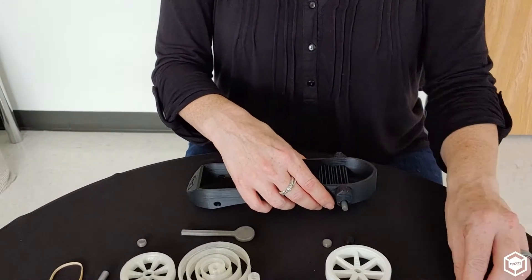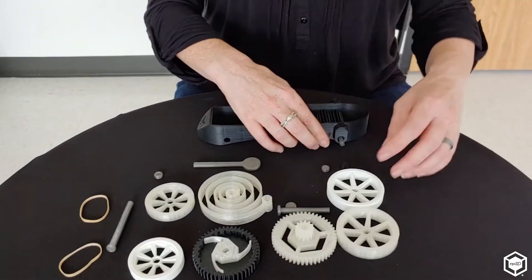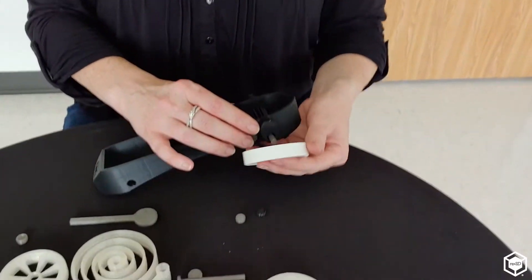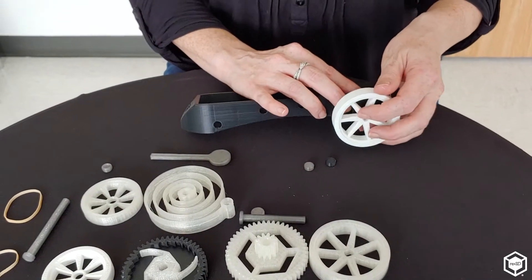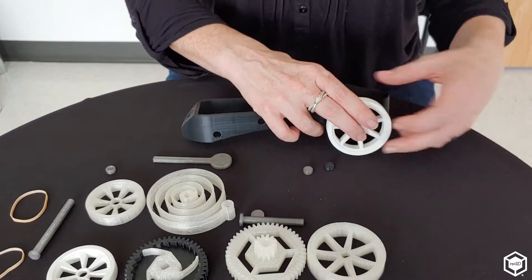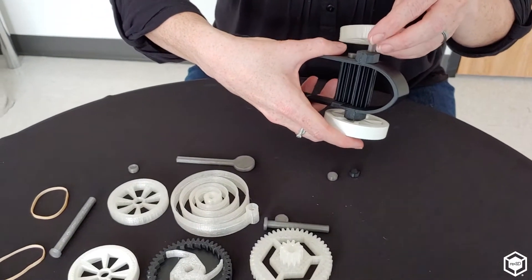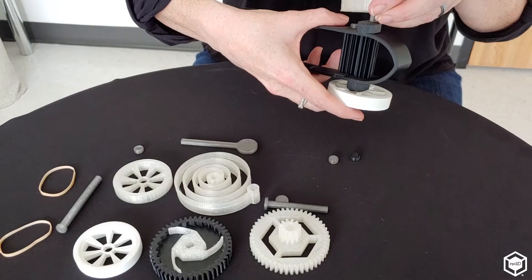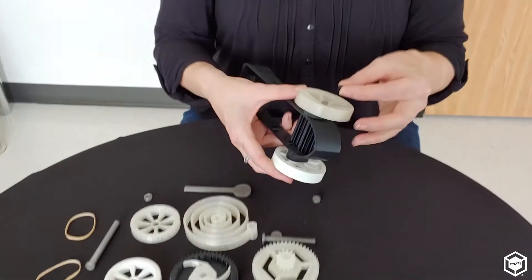We're going to add the small cap here and then we're going to add the back tires, one on each side. And then the caps for the tires.